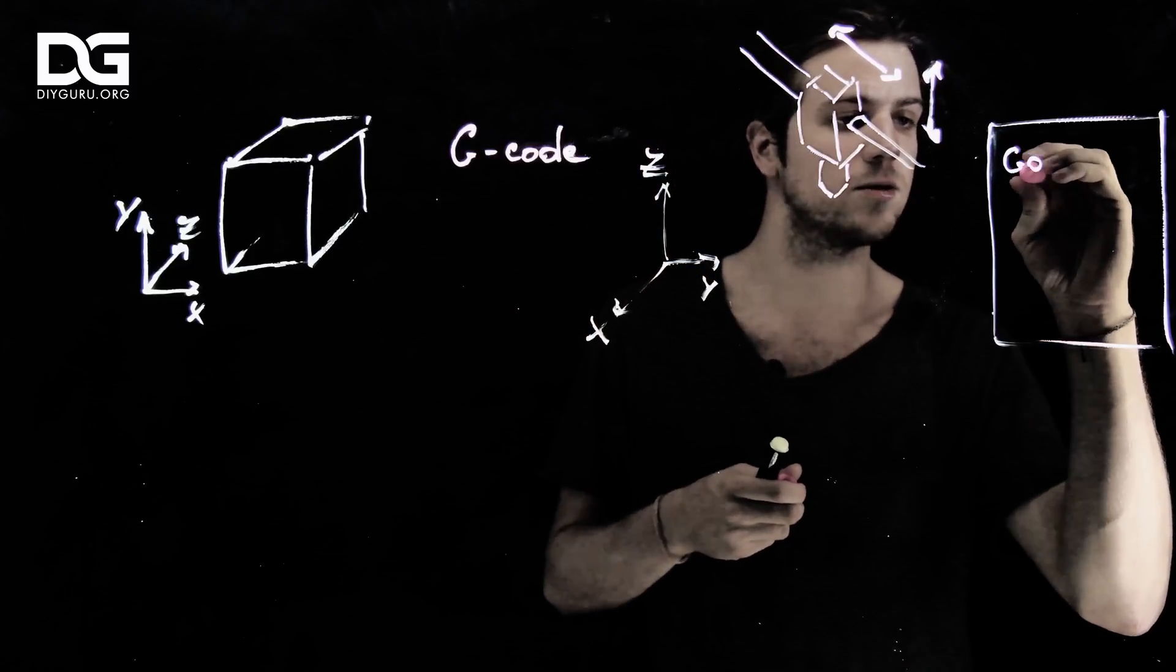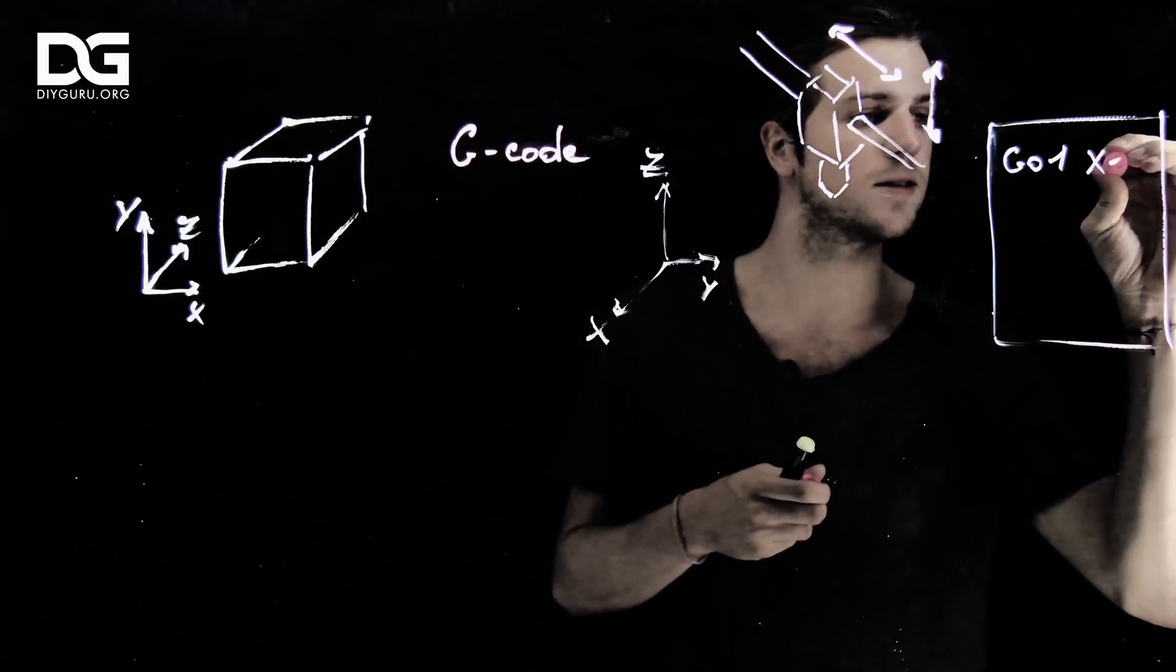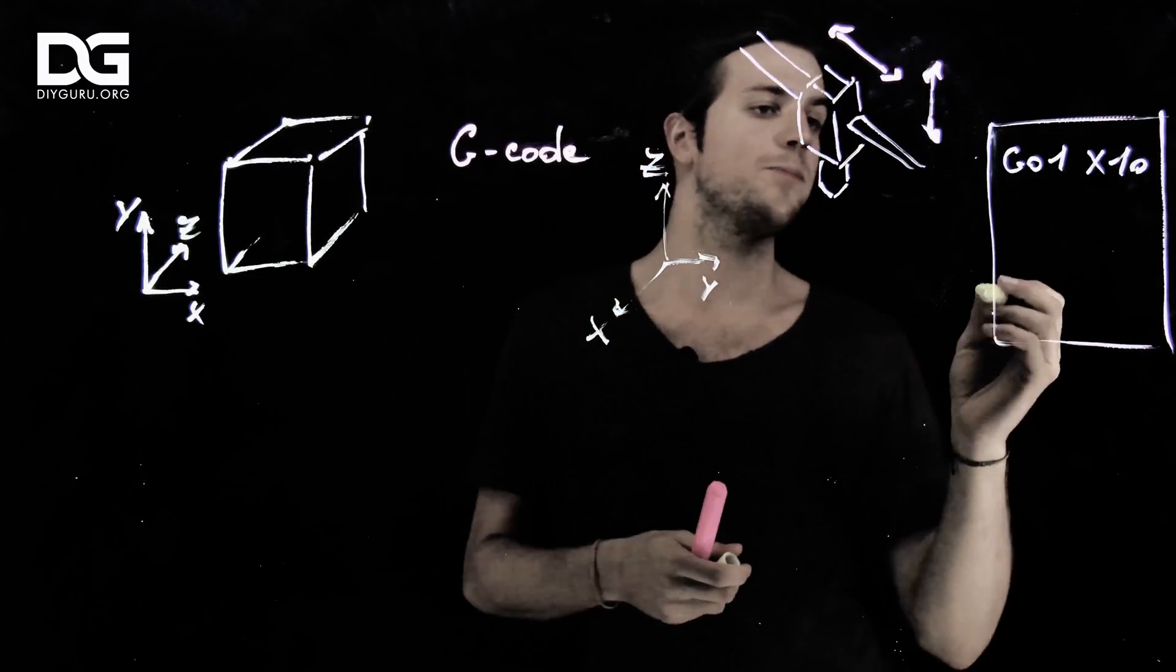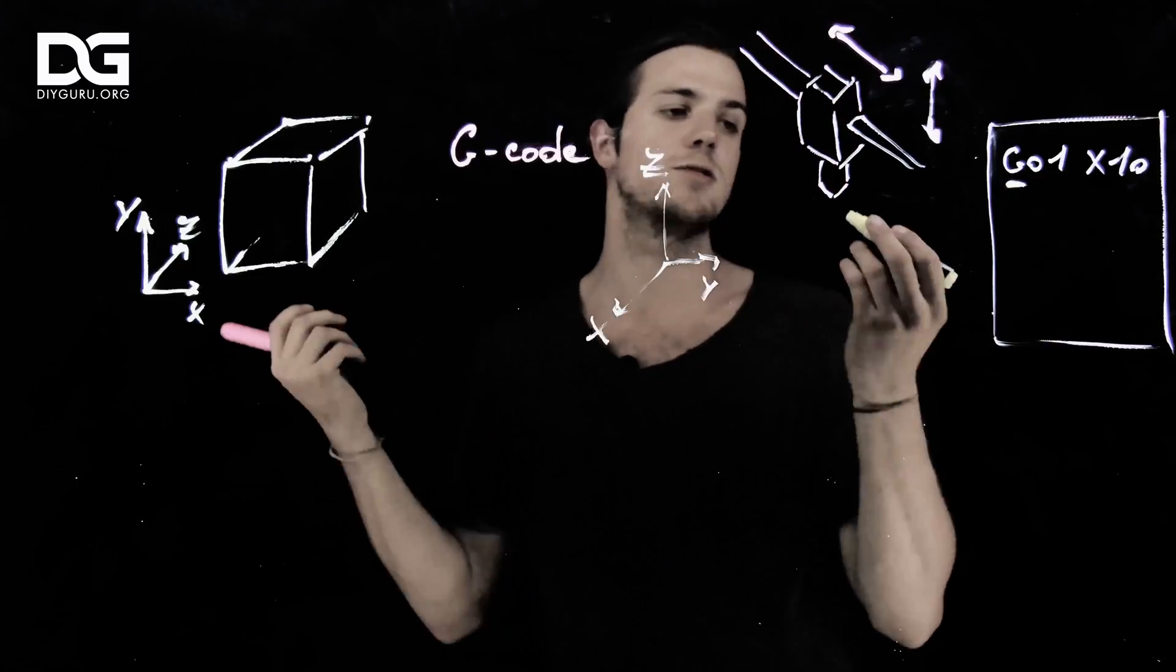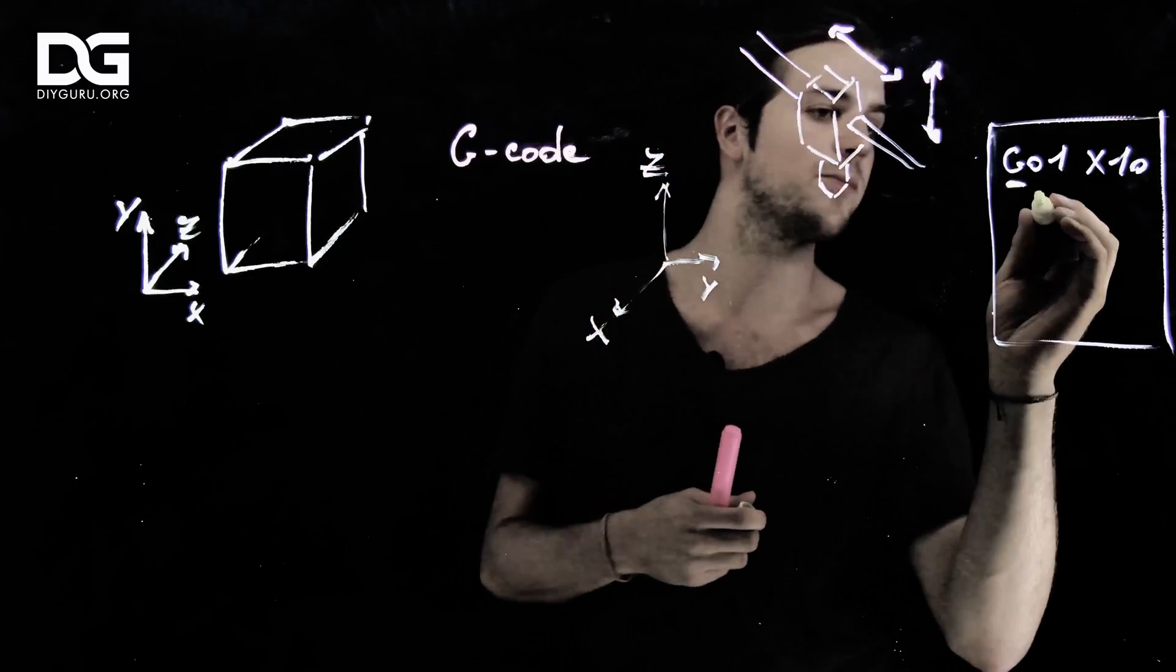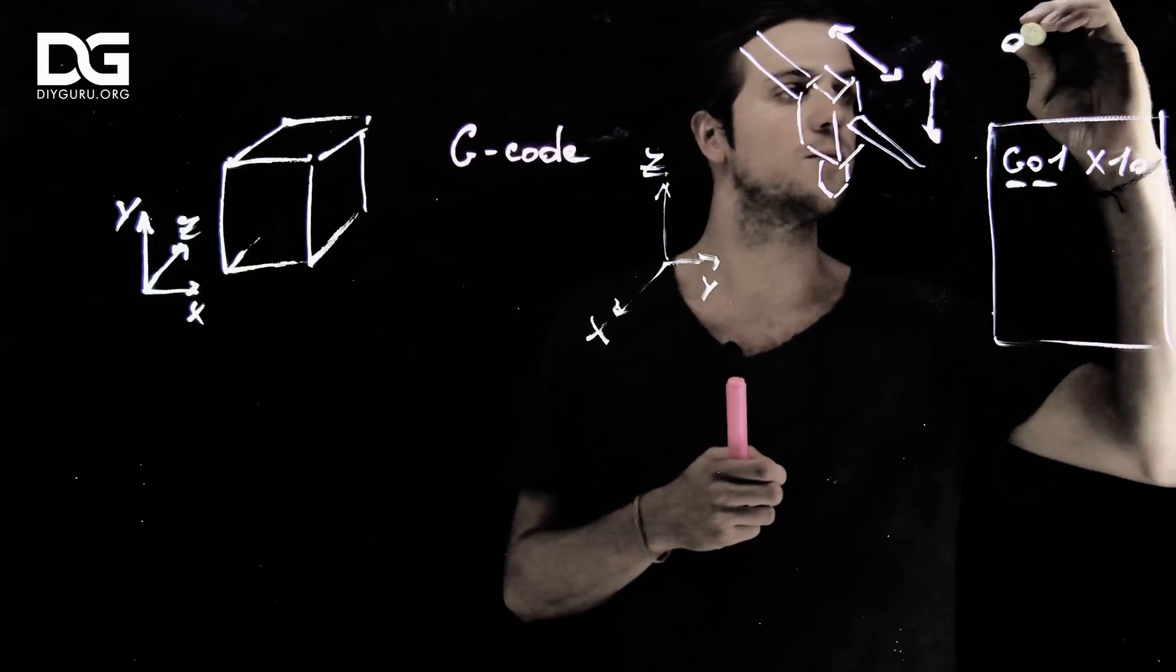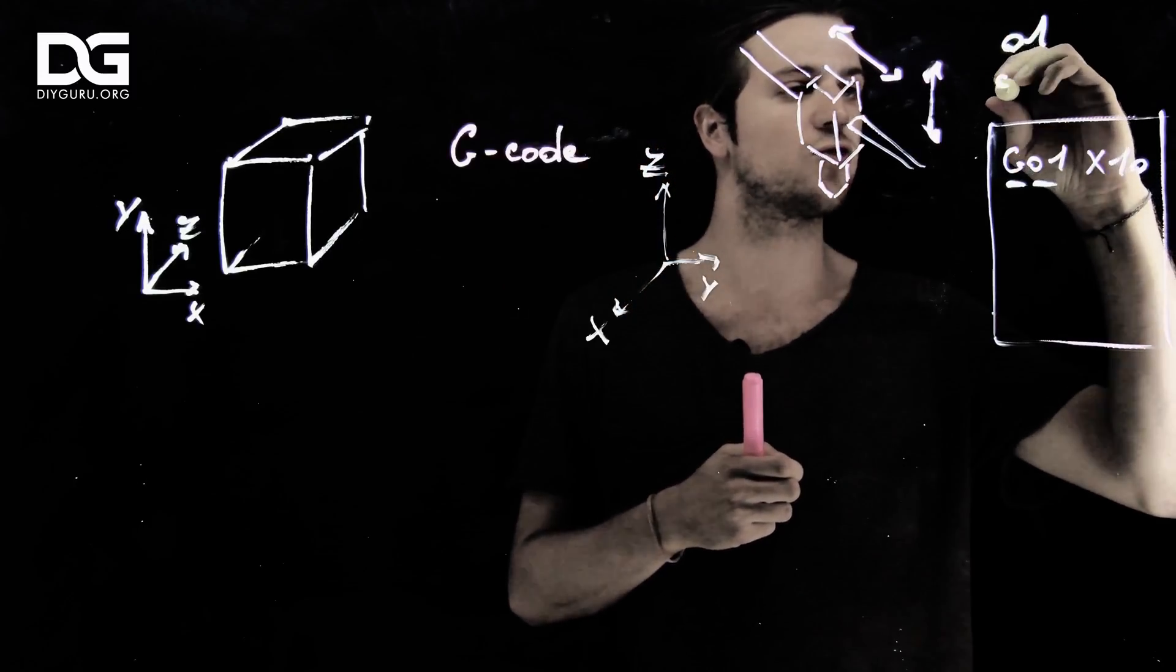I'm going to write a basic one, G01X10. All right, what does this mean? It's actually pretty simple. G stands for G-code. It's a movement command. That's very simple. 01 is the first command.